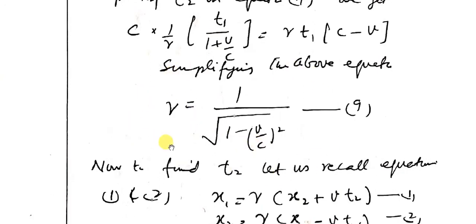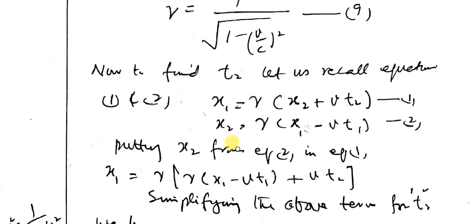Gamma will be equal to 1 if v is very small compared to c — then we say the gamma value is 1 because in classical physics, all reference frames move at speeds extremely small compared to the speed of light, so no relativistic factor is needed. But if v is very large — say 0.2, 0.3, 0.5, or 0.9 times c — then gamma must be taken into account.